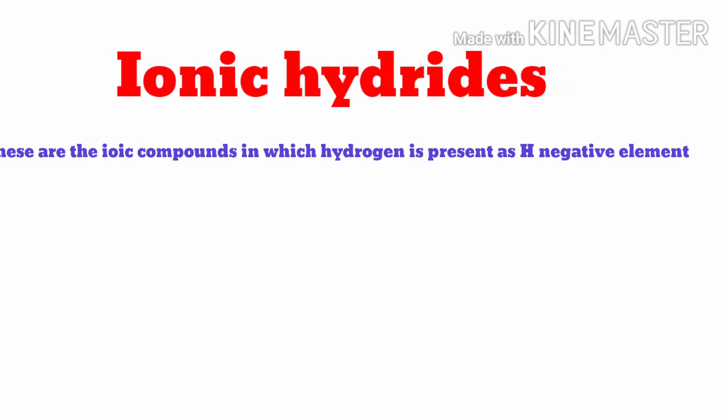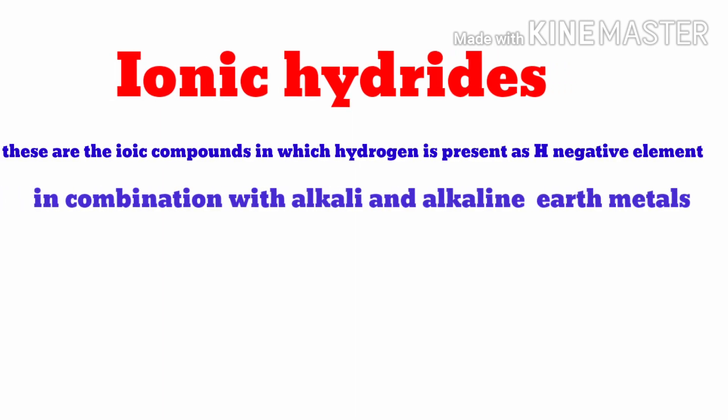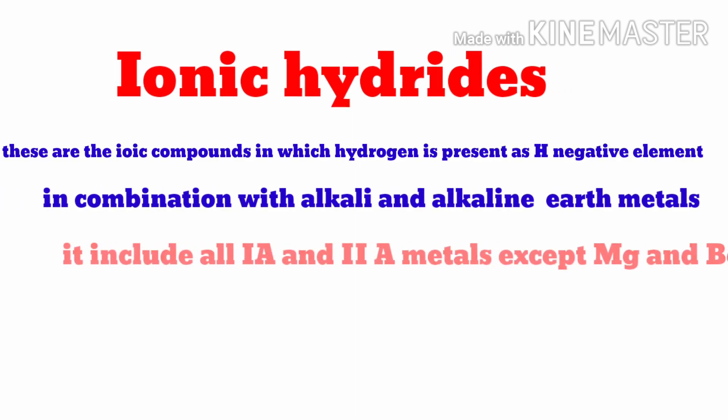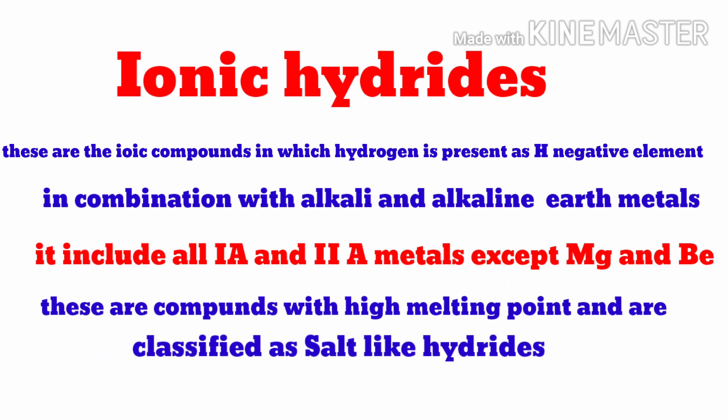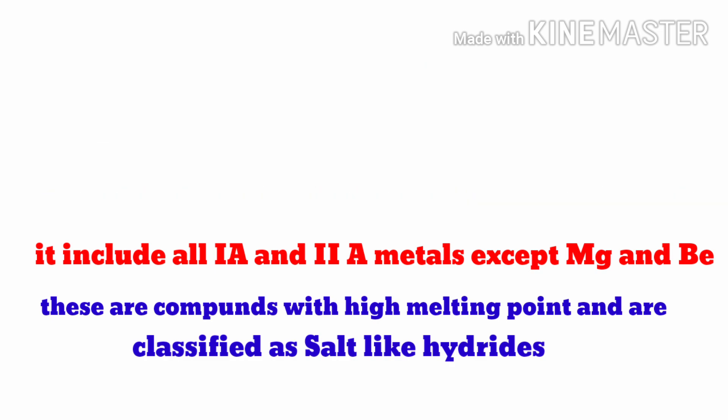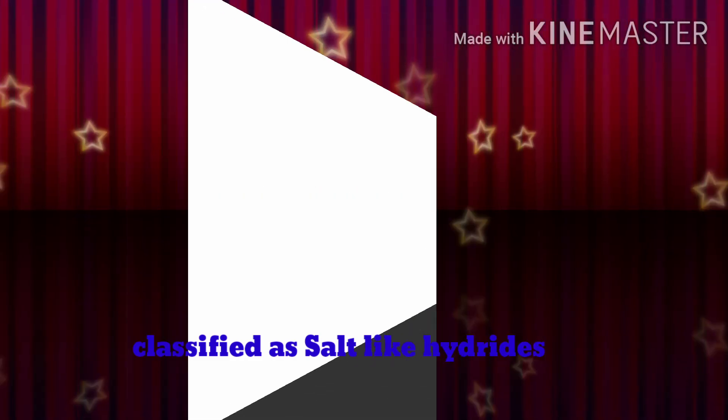Ionic hydrides are ionic compounds in which hydrogen is present as H⁻. These are formed in combination with alkaline earth metals and include all metals of group 1A and 2A, except magnesium and barium. These compounds have high melting points and are known as salt-like hydrides.